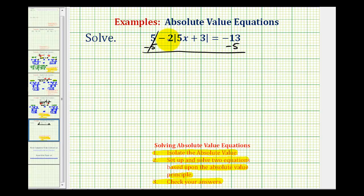This would be zero, so now we have negative 2 times the absolute value of 5x plus 3 equals negative 18. This negative 2 is attached by multiplication, so we'll divide both sides by negative 2. So we have the absolute value of 5x plus 3 equals positive 9.